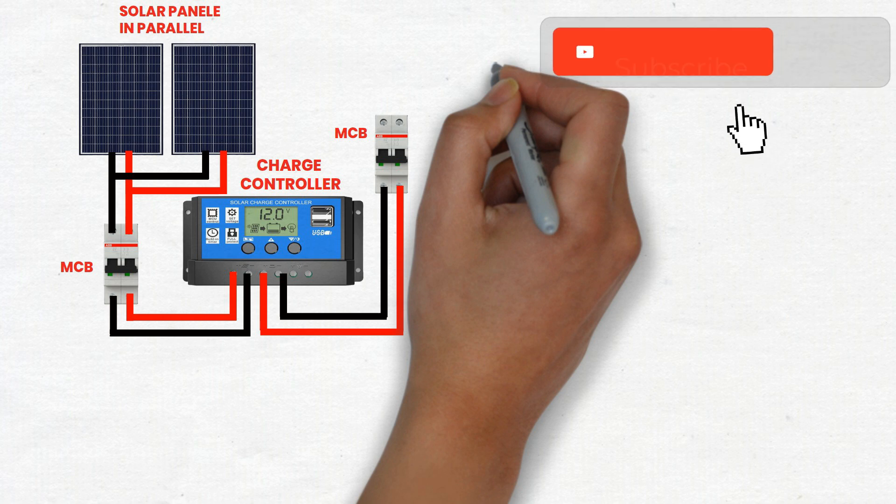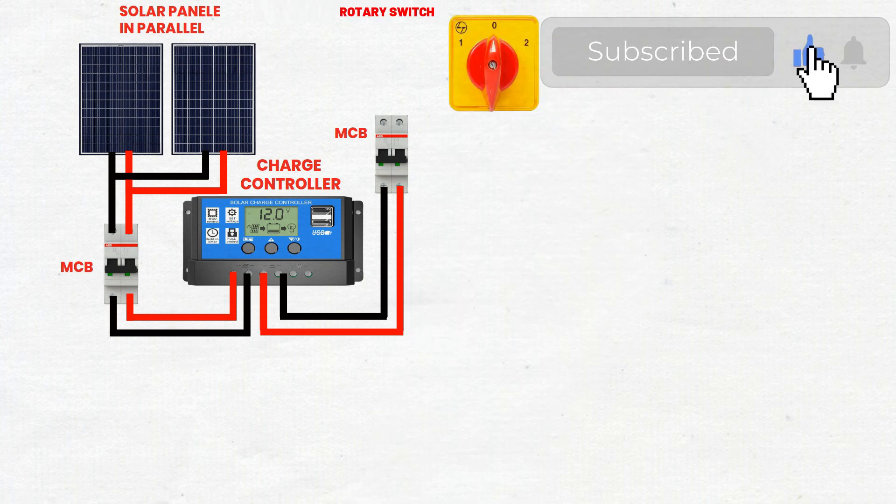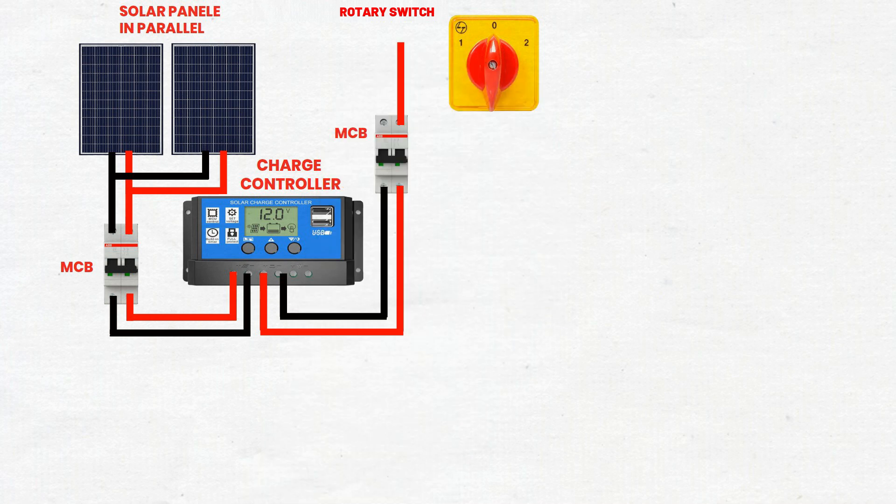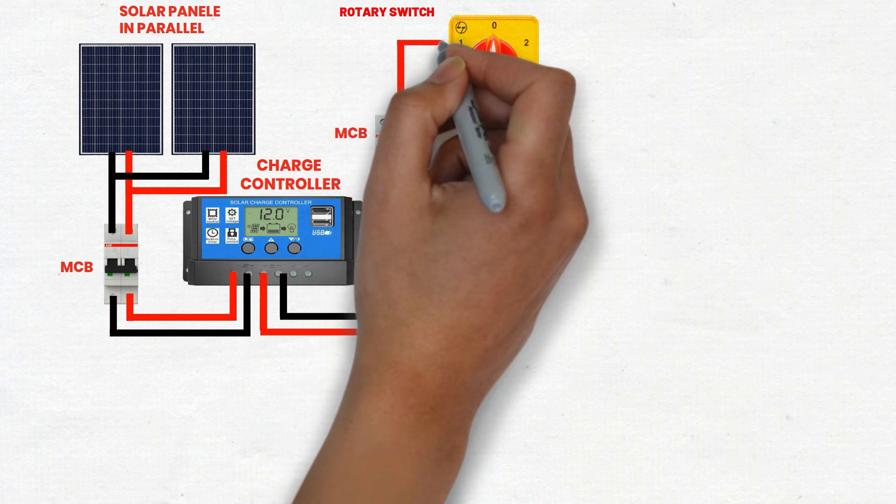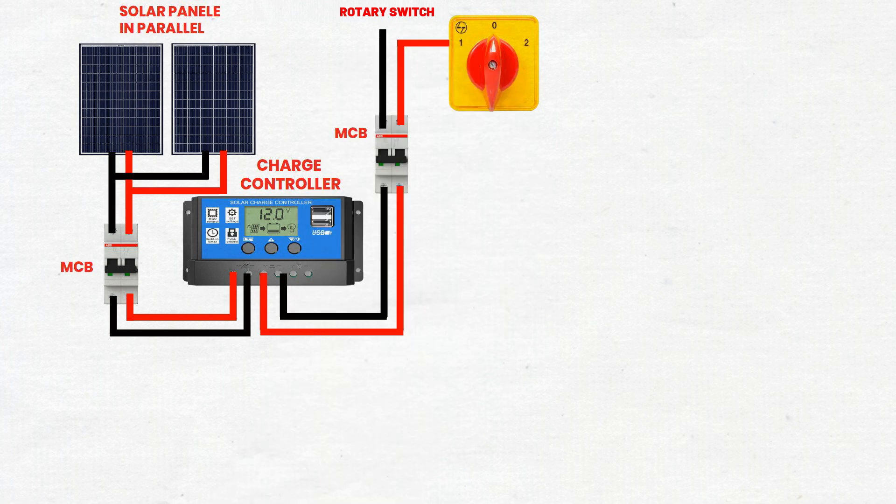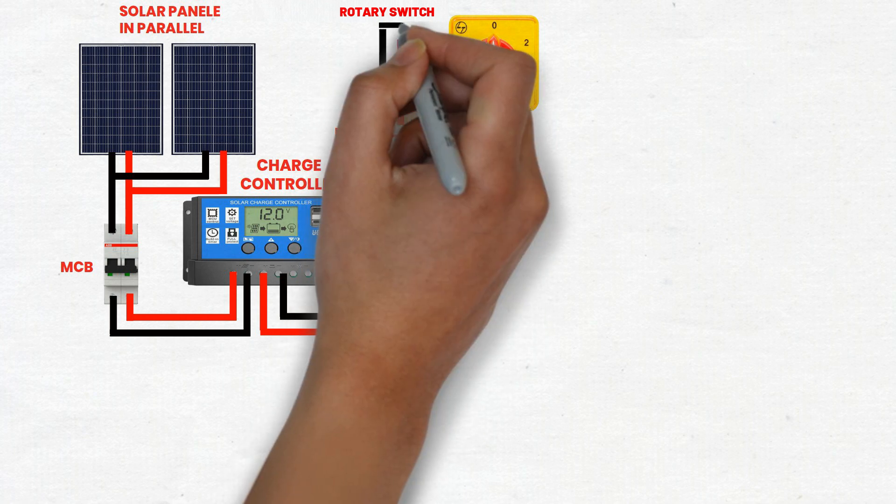Step 4: Connect second MCB to rotary switch. Run cables from the output of the second MCB to the input terminals of the rotary switch. The rotary switch will enable you to direct power flow as needed. A rotary switch allows you to manually select between different power sources or circuits.